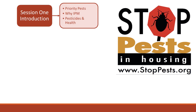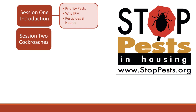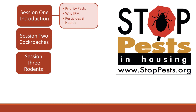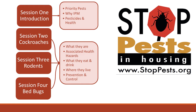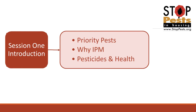Session two will focus on one of the three most problematic pest populations: cockroaches. Session three will focus on rodents, specifically mice and rats. We're saving bed bugs for session four. With each of the last three sessions, we will discuss the nature of each pest group, their life cycles, what they eat, and where and how they live. We have found great value in understanding the way each group of pests survives as a way of learning how to control them effectively and safely. That is what IPM is all about — safely controlling pests while minimizing health risks to the human occupants.